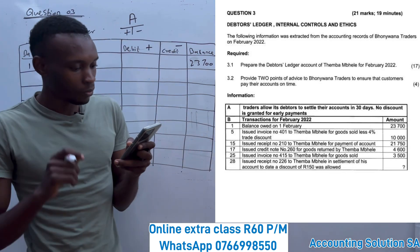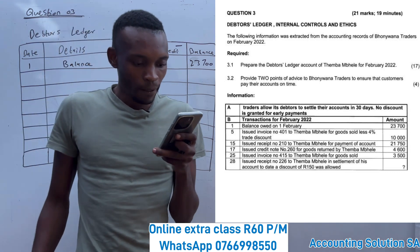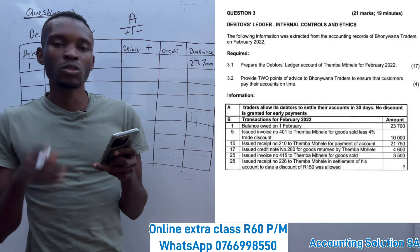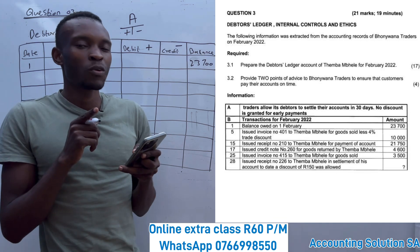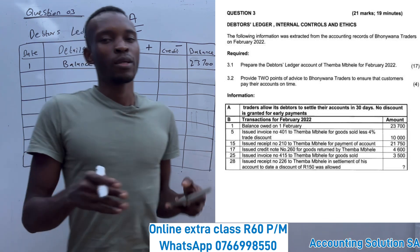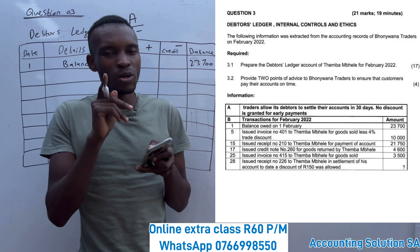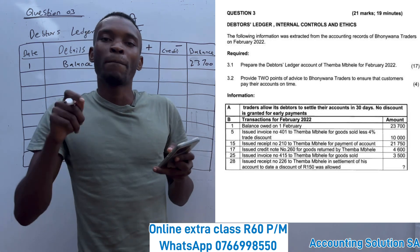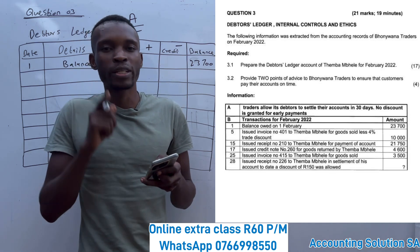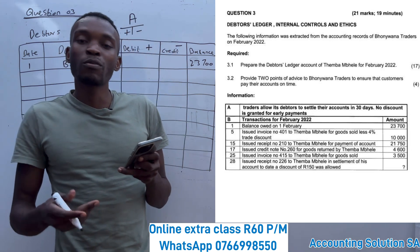Number two: on the 5th, they issued invoice number 401 to Tembambele for goods sold, less 4% discount. We sold goods on credit to this customer. When you sell for cash, you don't record the customer's name, but if they are buying on credit, you record it so you can follow up if they don't pay. Issuing an invoice simply means that he purchased on credit.